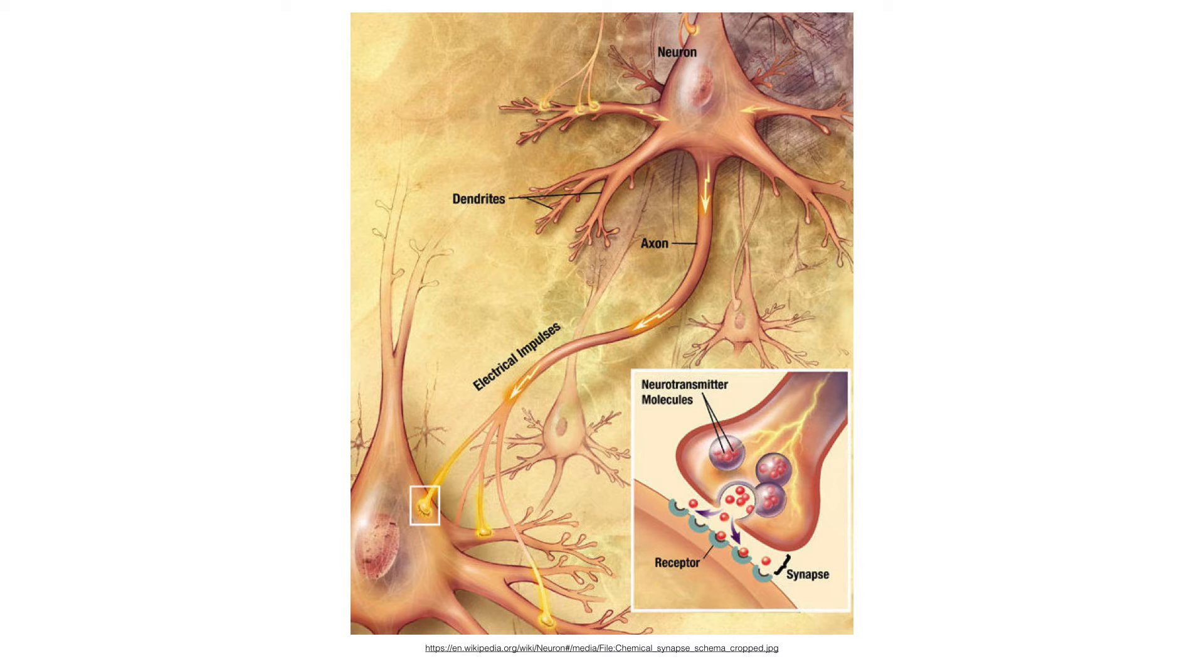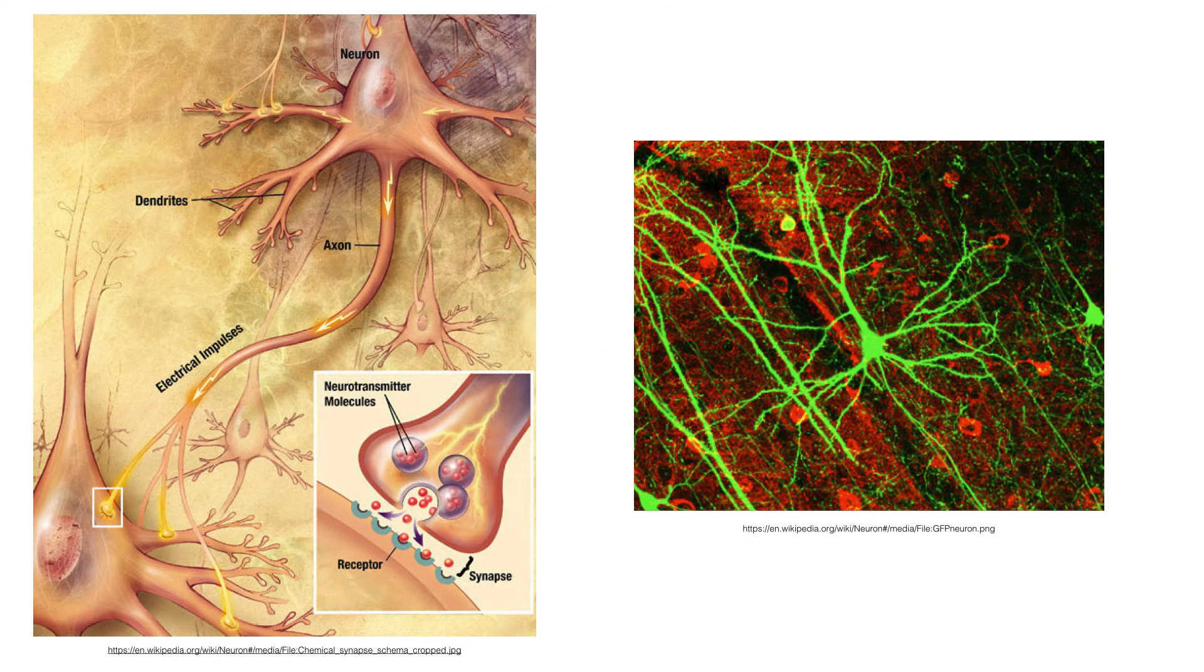Each neuron has a bunch of incoming signals, and if enough of those signals are activated, then the neuron itself will start activating and send signals out to whatever it's connected to. Neurons are connected in a complex network that gives rise to all of our human intelligence and animal intelligence that have similar nervous systems.